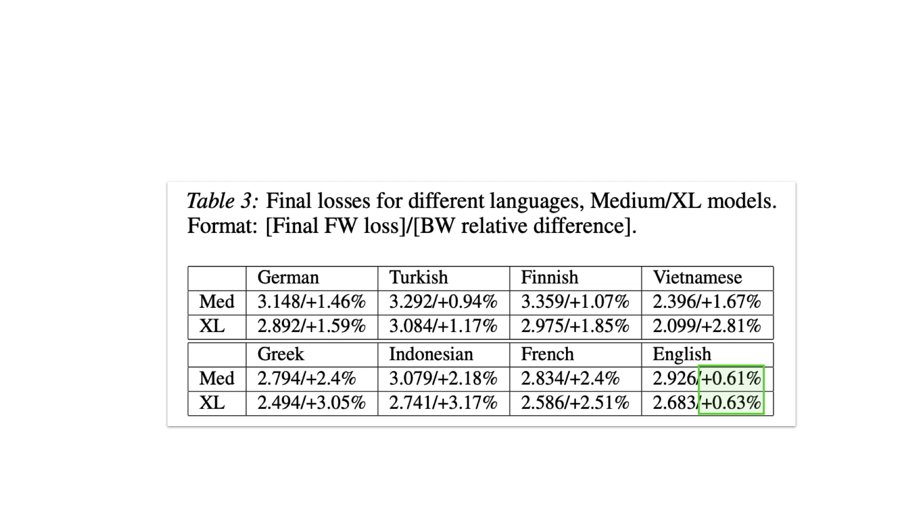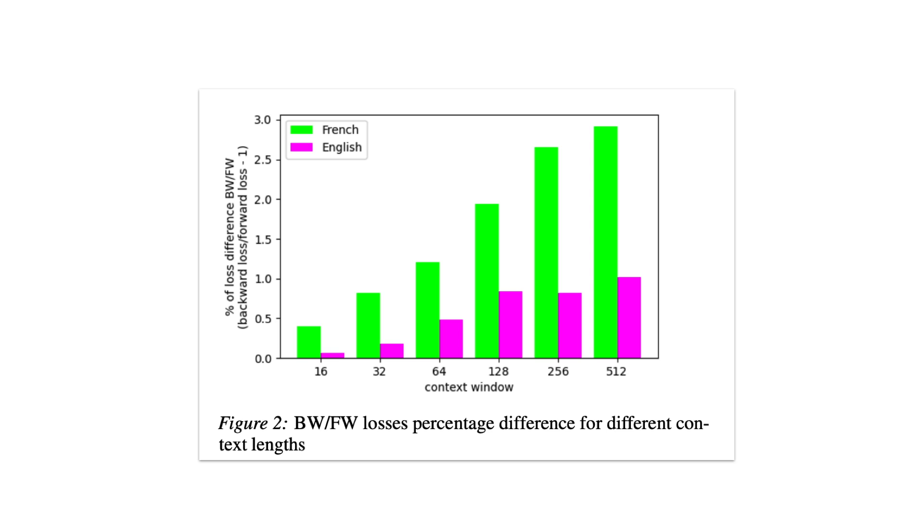Now, one ablation the authors perform is on the context window size. For different window sizes, the y-axis here shows the relative difference between the backward and forward model losses. That is, again, what percent greater the backwards model loss is compared to the forwards. We see as context length grows, apparently the greater the effect of the arrow of time.